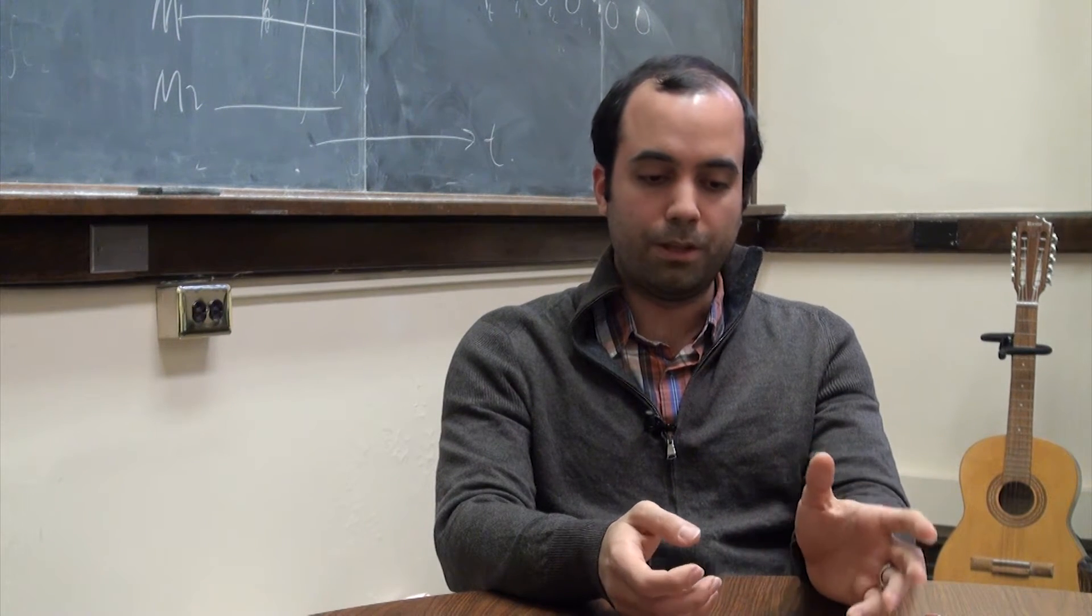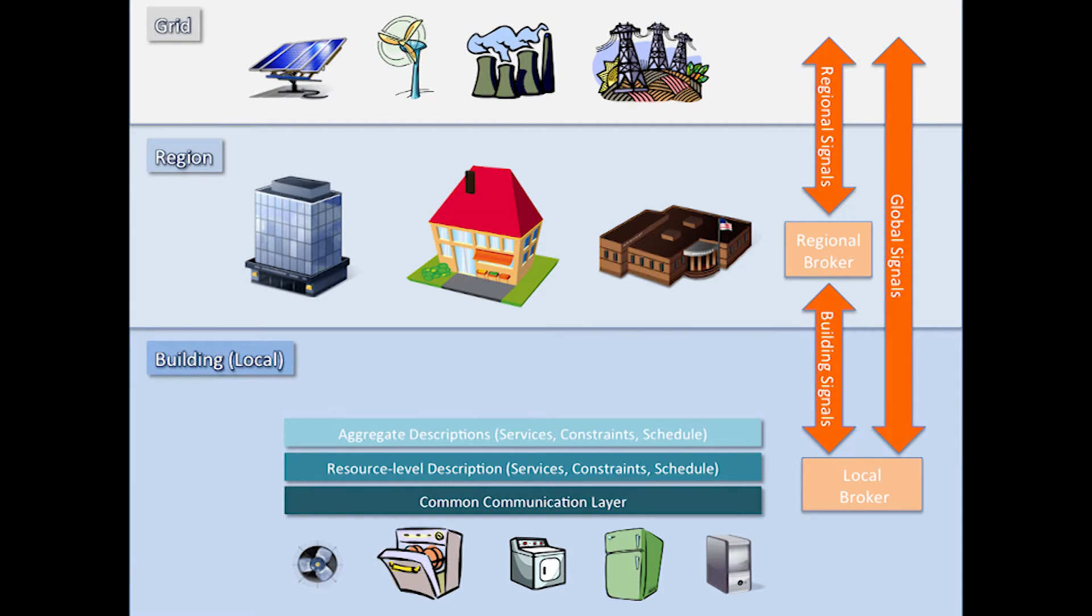And then lastly, we're also looking at ways in which we can integrate the buildings into this concept that is now very much a research topic, which is the smart grid. So this idea of making buildings be part of the solution to controlling the demand and supply of energy in our power network.